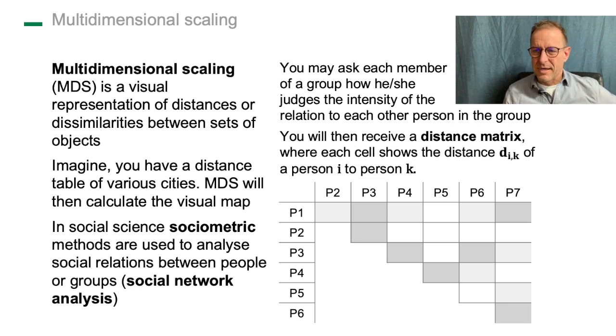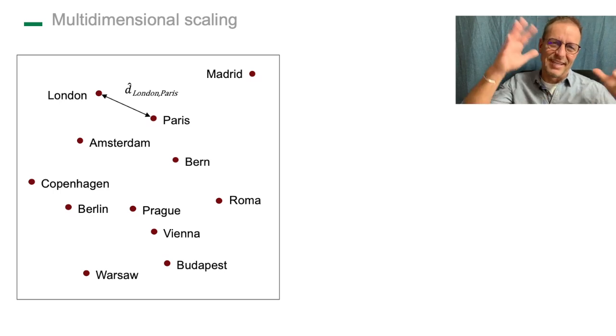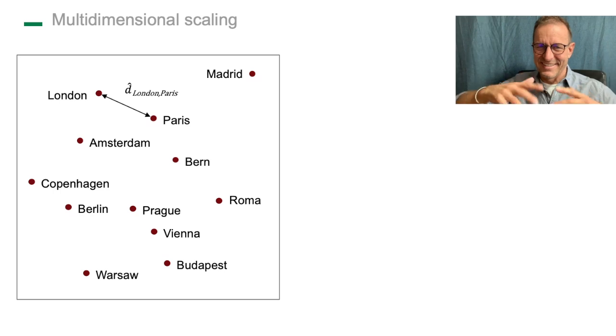As a result, you get a map. I show you here a map based on cities. I go back to the city example because that's easy to understand. You see now all the cities, not all but many cities from Europe. Sorry when you come from a certain country and I miss your particular capital, don't take it personal. What you see here: Madrid, London, Paris, Amsterdam, Bern, Copenhagen, Rome, Prague, Vienna, Budapest, Warsaw, Berlin. Based on the distance matrix, you might create a map like this.